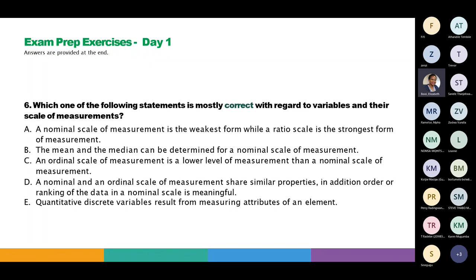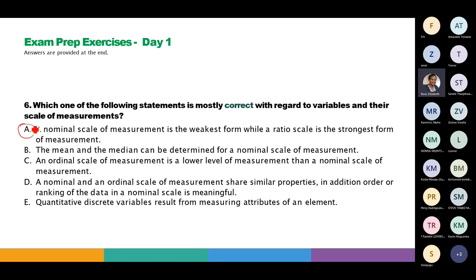Question six: which one of the following statements is mostly correct regarding variables and their scales of measurement? A says nominal scale of measurement is the weakest form while ratio is the strongest — that is correct. We've already touched on all of these, so we can move on.